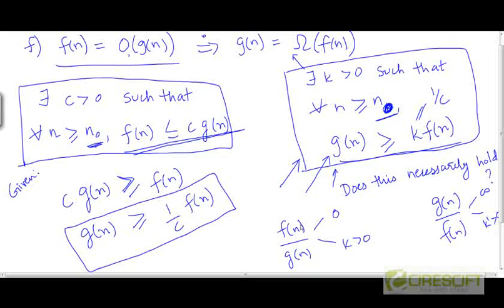Likewise, if f(n) is growing at a smaller rate than g(n), and that's the reason f(n) is in Big O of g(n), then one can say that g(n) is growing at a larger rate than f(n). And for that reason, g(n) is in Big Ω of f(n).